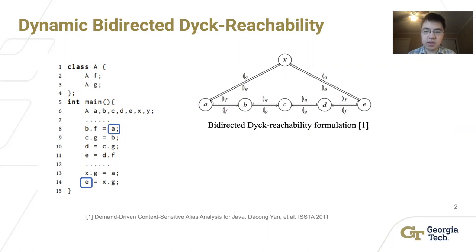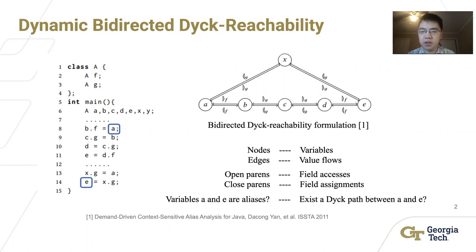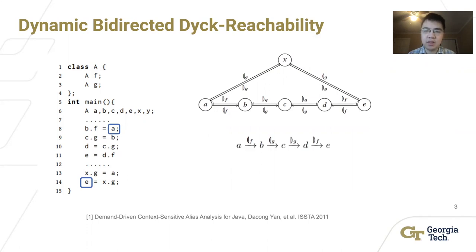The analysis extracts a bidirected graph from the given program. In this reachability graph, nodes represent variables and edges represent value flows in the original program. The open parentheses edges are labeled to represent field accesses, and the closed parentheses represent field assignments. The question of whether variable A and variable E are aliases becomes whether there exists a Dyck path between node A and node E.